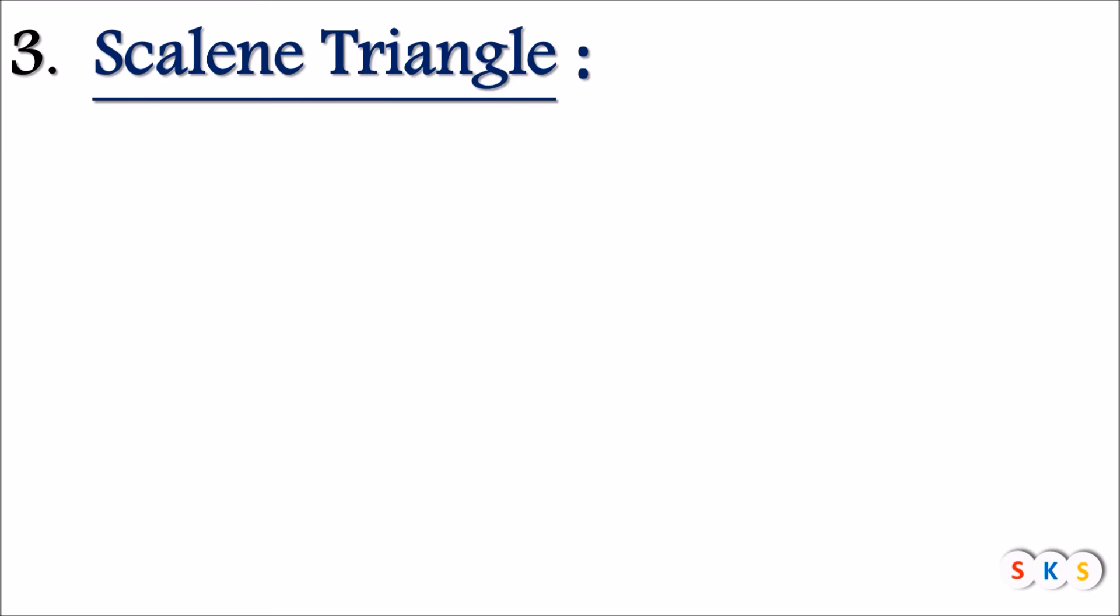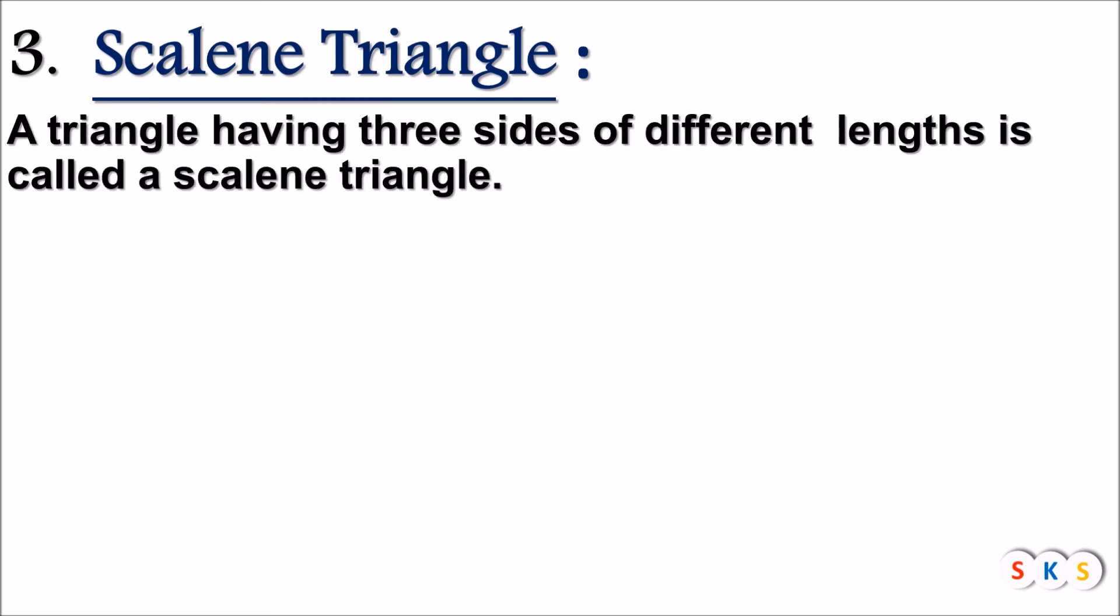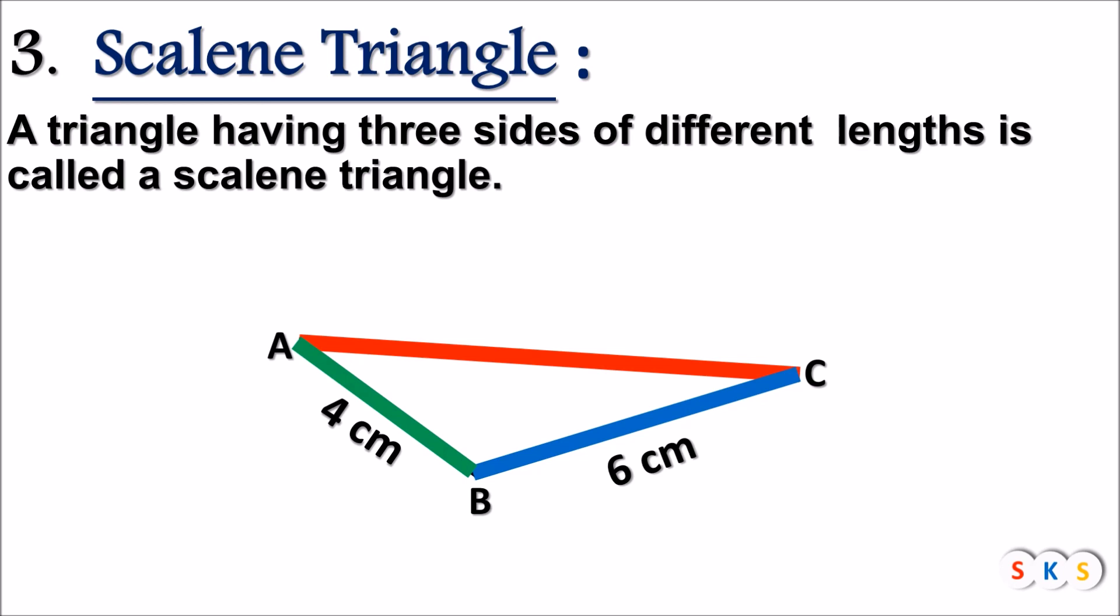Scalene triangle: A triangle having three sides of different lengths is called a scalene triangle. Look at this figure. Length of segment AB is 4 cm, length of segment BC is 6 cm, and length of segment AC is 7 cm. So here you can see that each side of this triangle have different length. Hence this triangle is known as scalene triangle.